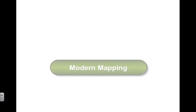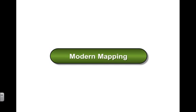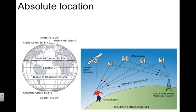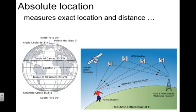Now we're going to look at modern mapping and some of the technologies that are associated with our world today. Starting off with a very simple term: absolute location. The definition is that absolute location measures exact location and distance.